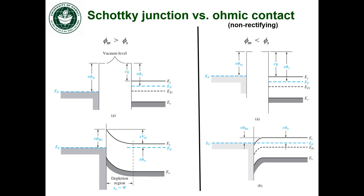And what that does is that will cause the bands to bend the opposite way. They'll bend down right near the metallurgical junction.